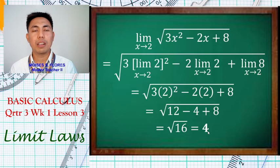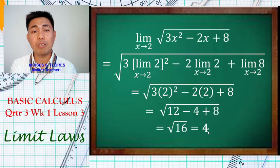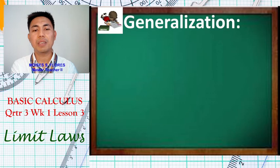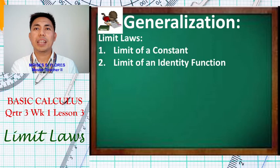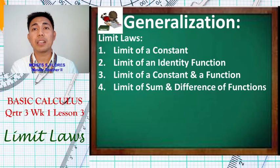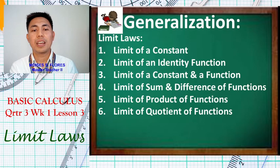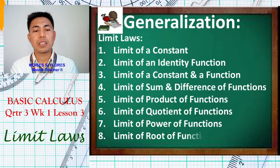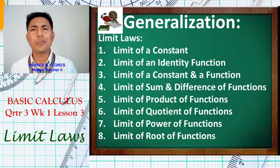To sum up our discussion, we have covered the eight laws on limits, which enable us to directly evaluate limits without making a table or drawing a graph. These are: limit of a constant, limit of an identity function, limit of a constant and a function, limit of sum and difference of functions, limit of product of functions, limit of quotient of functions, limit of power of functions, and limit of root of functions.